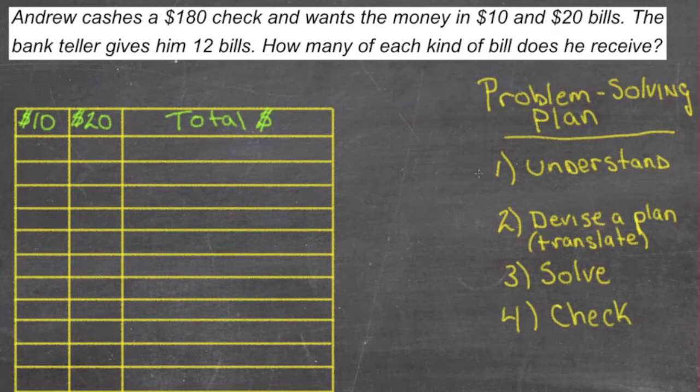We're going to use our problem-solving plan. The first thing we need to do is understand the problem. Andrew has a check that's $180 and he wants the money in $10 and $20 bills. The bank teller is going to give him a bunch of bills, a total of 12 of them. What we need to do is figure out how many of each of those he has so that it equals that $180 that he was actually supposed to get.